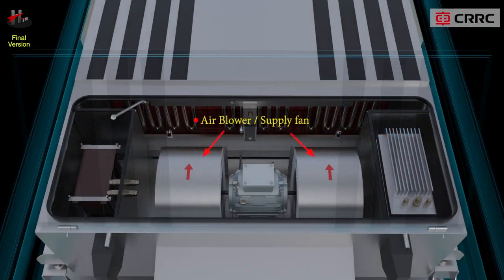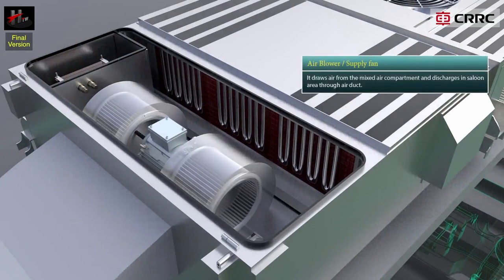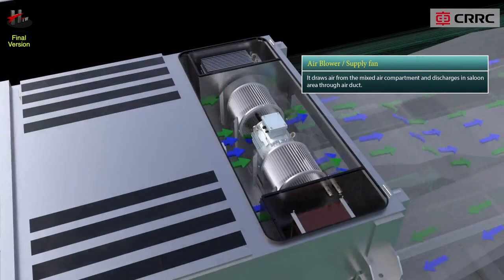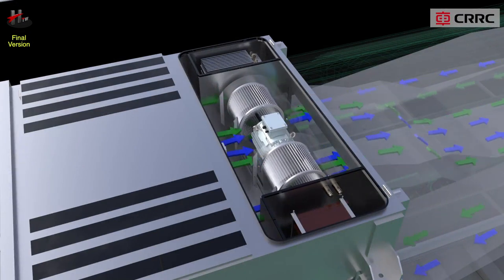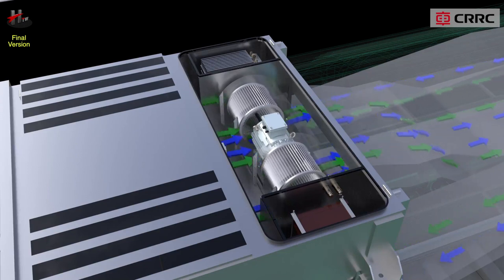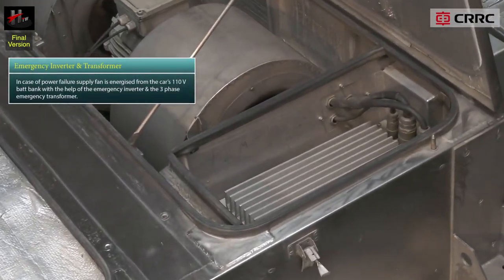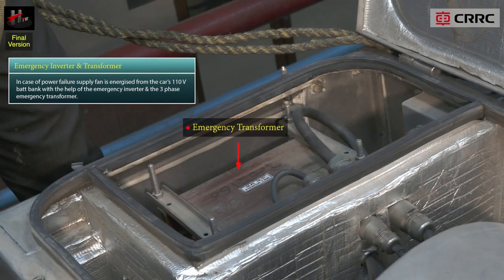The air blower or the supply fan located in the supply fan compartment is energized whenever the air conditioner is switched on. It draws air from the mixed air compartment and discharges it into the saloon area through the air duct. In normal operation the supply fan is supplied with 415 volts from the train's static inverter. In case of power failure, the supply fan is energized from the car's 110-volt battery bank with the help of the emergency inverter and the three-phase emergency transformer.